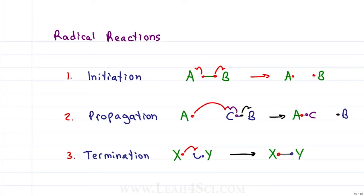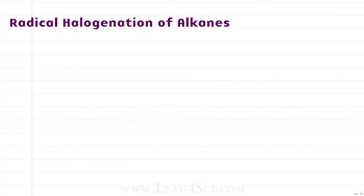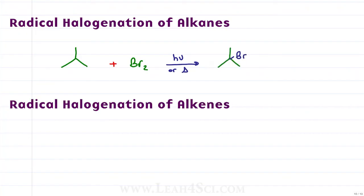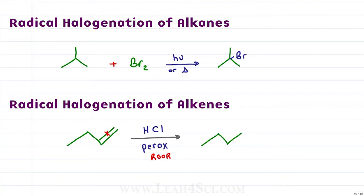The two radical reactions you may have seen are radical reactions of alkanes and radical reactions of alkenes. In the first, an alkane reacts with a halogen in the presence of heat or light (hν), causing the halogen to turn into a radical that attacks the alkane, giving us a haloalkane. The second is radical halogenation of alkenes, where you react an alkene with HX — in this case HCl — in the presence of peroxides like ROOR. This breaks the pi bond and gives a similar product to non-radical hydrohalogenation, except the halogen adds to the less substituted or anti-Markovnikov position.